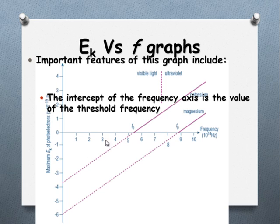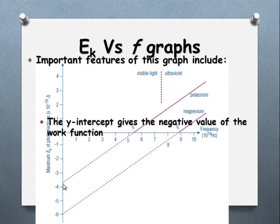Let's look at the next point. The y-intercept is the negative value of the work function. This value here is our work function.